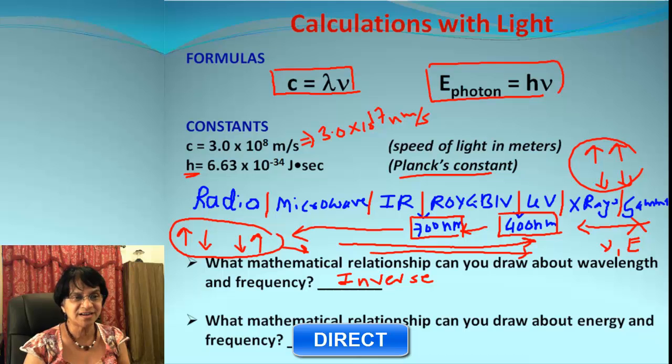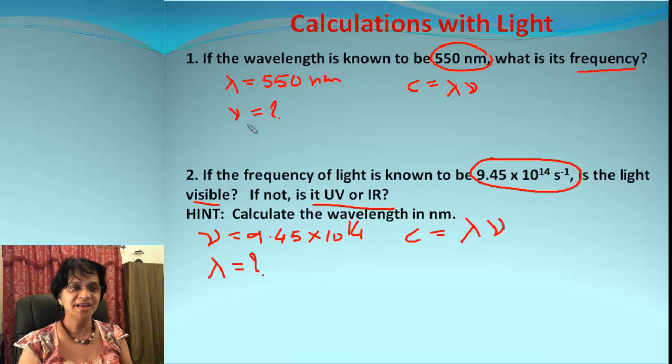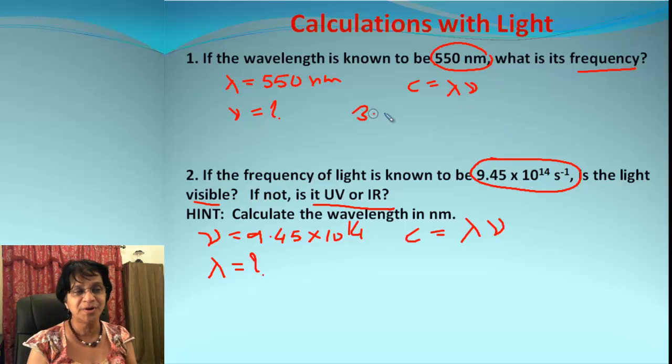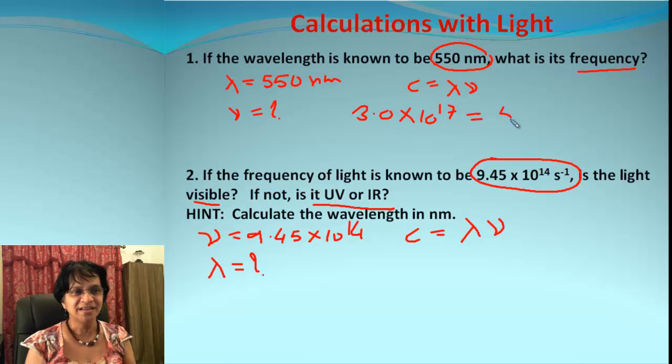Let's look at some real problems now. Here we have wavelength given as 550 nanometers, and our job is to find out the frequency. We're going to use the simple formula c = λν. When we plug in, we use the light speed 3.0 × 10^17 nanometers per second, and the wavelength is 550, times the unknown frequency. When we solve this, we get 5.45 × 10^14, and the unit is sec^-1.